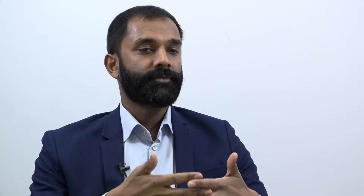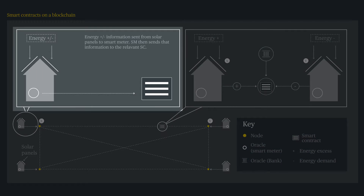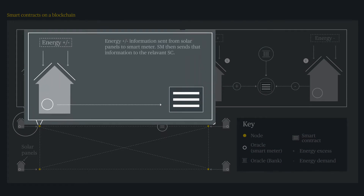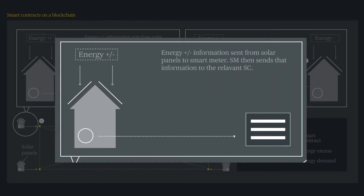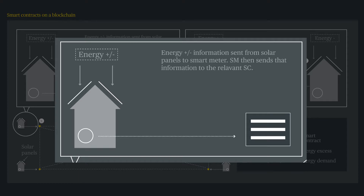Here we've got a private blockchain network between some parties. The main parties are X and Y, and it's basically facilitating the transfer of excess energy from X, who has the excess energy, to a user Y that has an energy shortfall. The smart contract is being deployed on that private blockchain based on if-then conditionals: if this happens, then transfer the energy from X to Y.